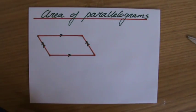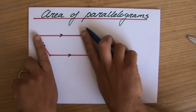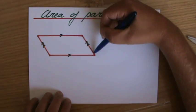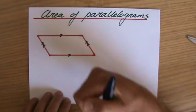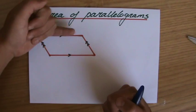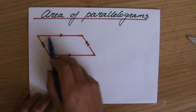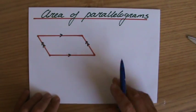Also, a parallelogram, those opposite sides are equal in length. So if this length is, let's say, 5, that length is going to be 5 as well. And if that length is 12, then the opposite length is 12 as well.